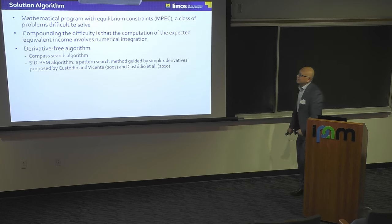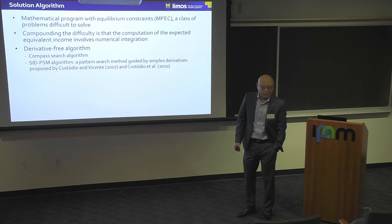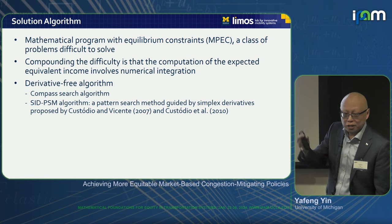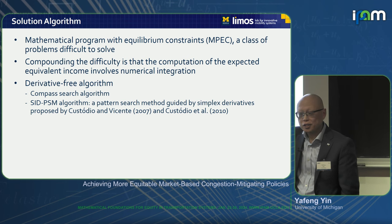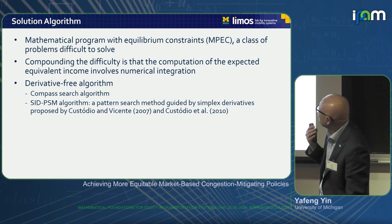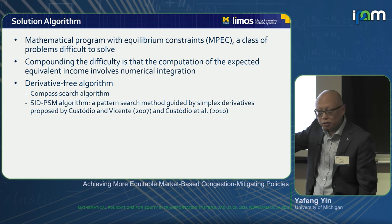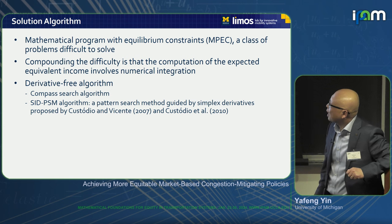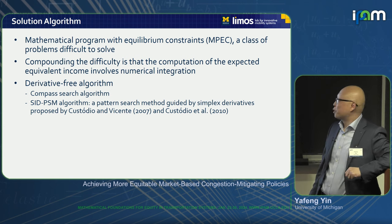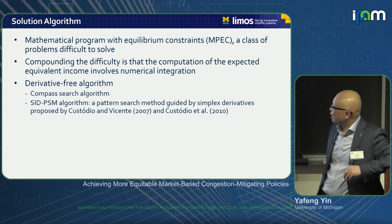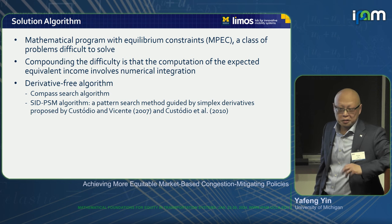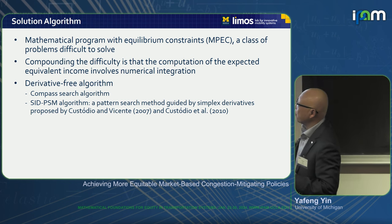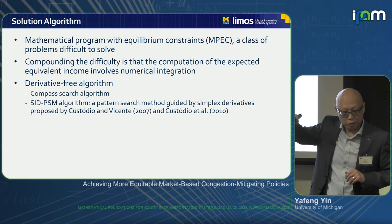The problem is a mathematical program with equilibrium constraints — an MPEC — which is very difficult to solve because it's non-convex and constraint qualification is not necessarily satisfied. An additional computational difficulty is that we must do numerical integration to compute the expected equivalent income. For the empirical study, we used a derivative-free method. We tried different methods, and the compass search — a particular pattern search method — actually performed well in our numerical example, though we believe better solution algorithms can be developed.